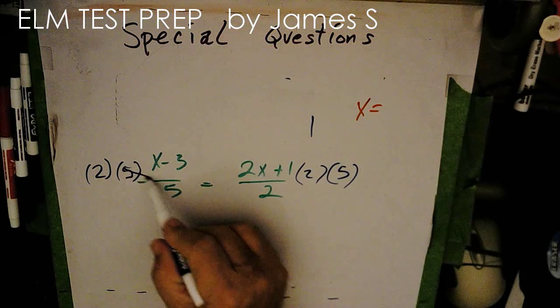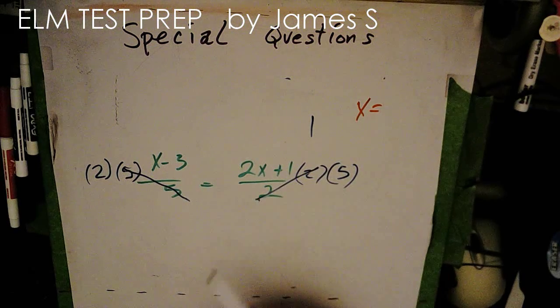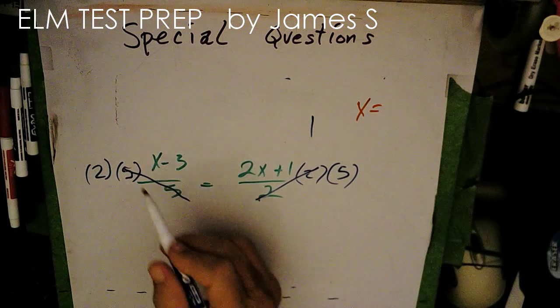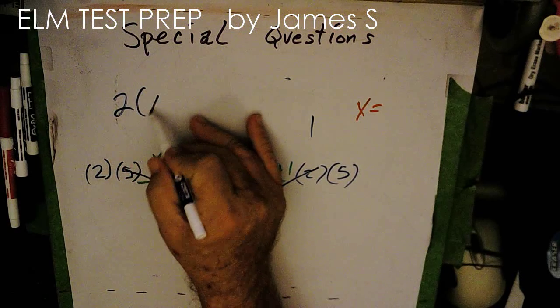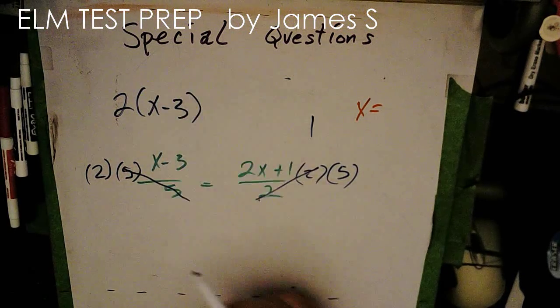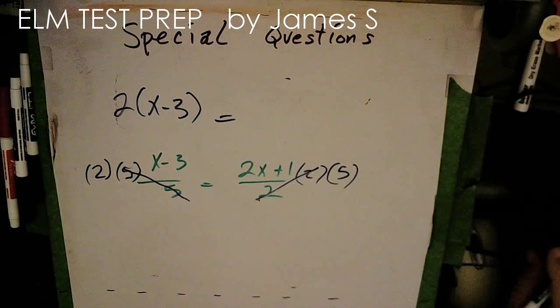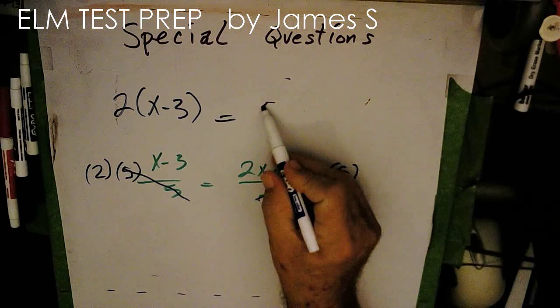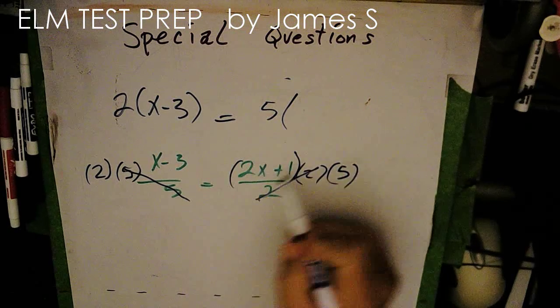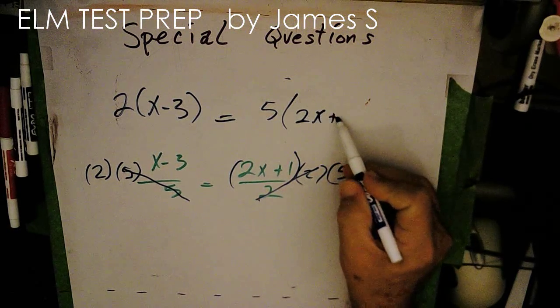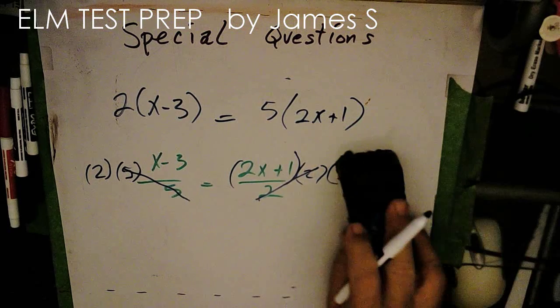Well, over on this side the 5 cancels the 5, the 2 cancels the 2. And now I have 2 times x minus 3 here equal to, I'm just going to take that out of there, I have 5 times this quantity here, 2x plus 1.